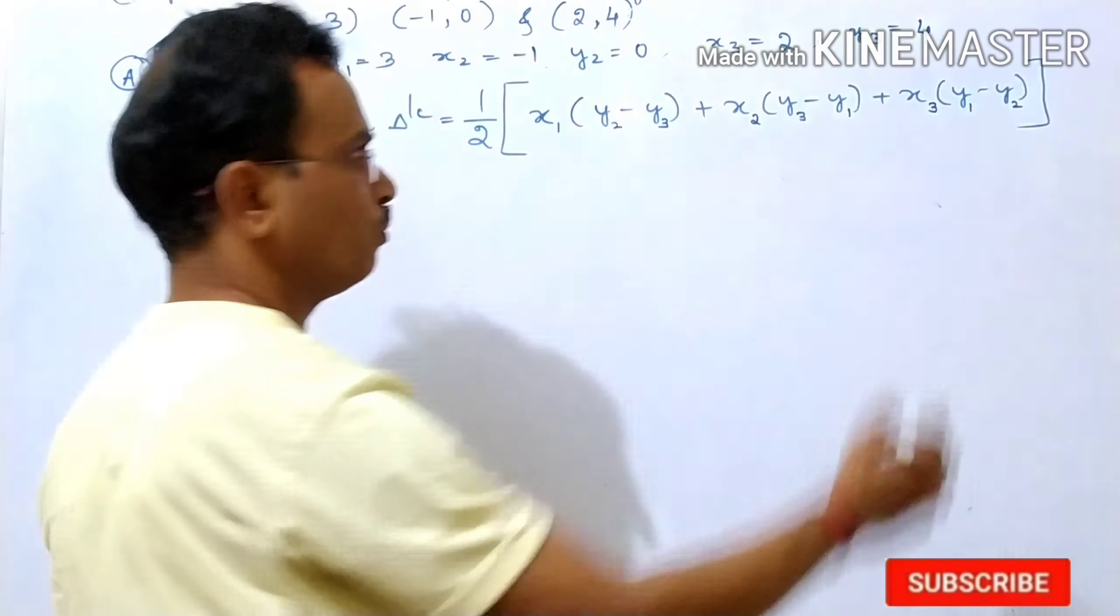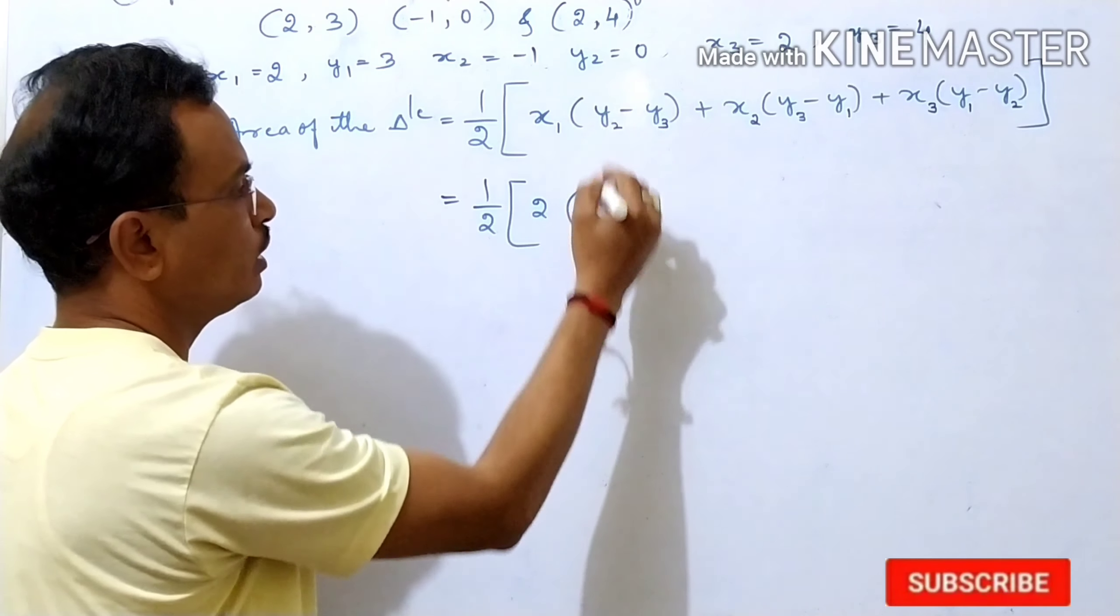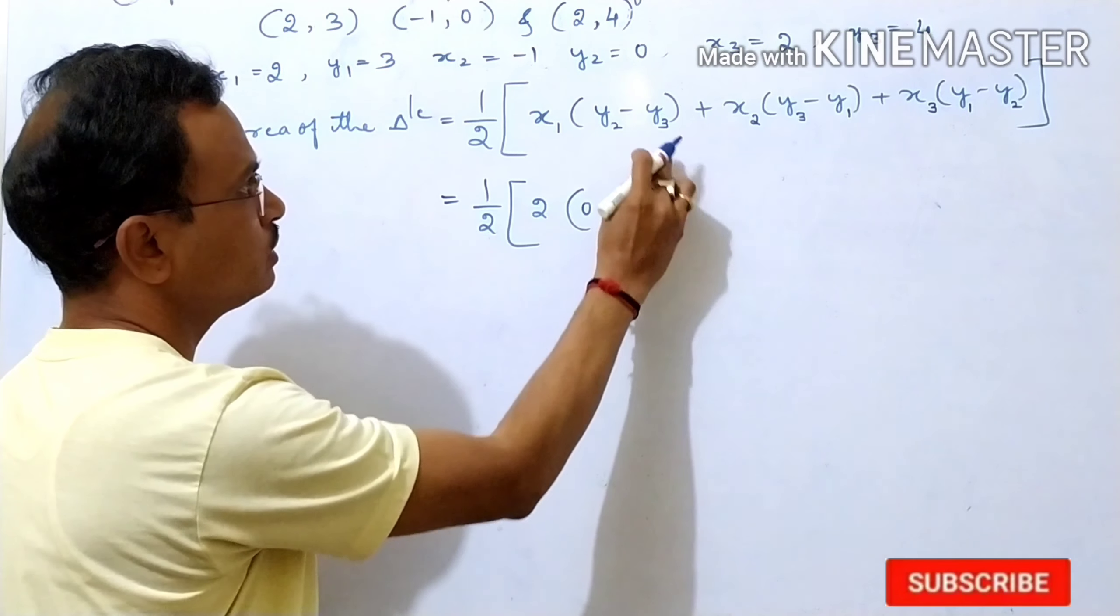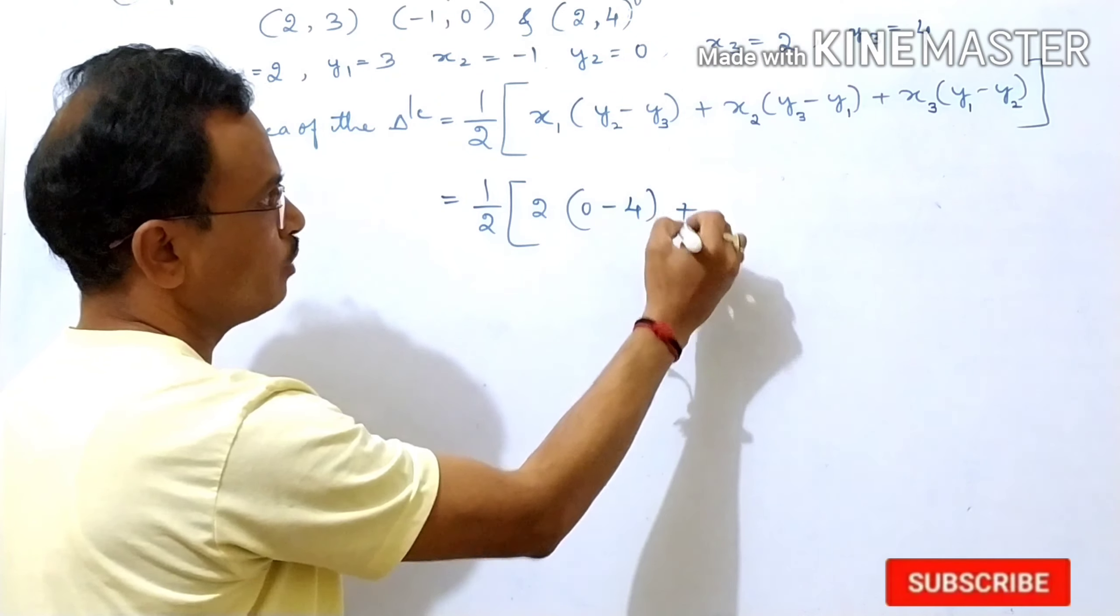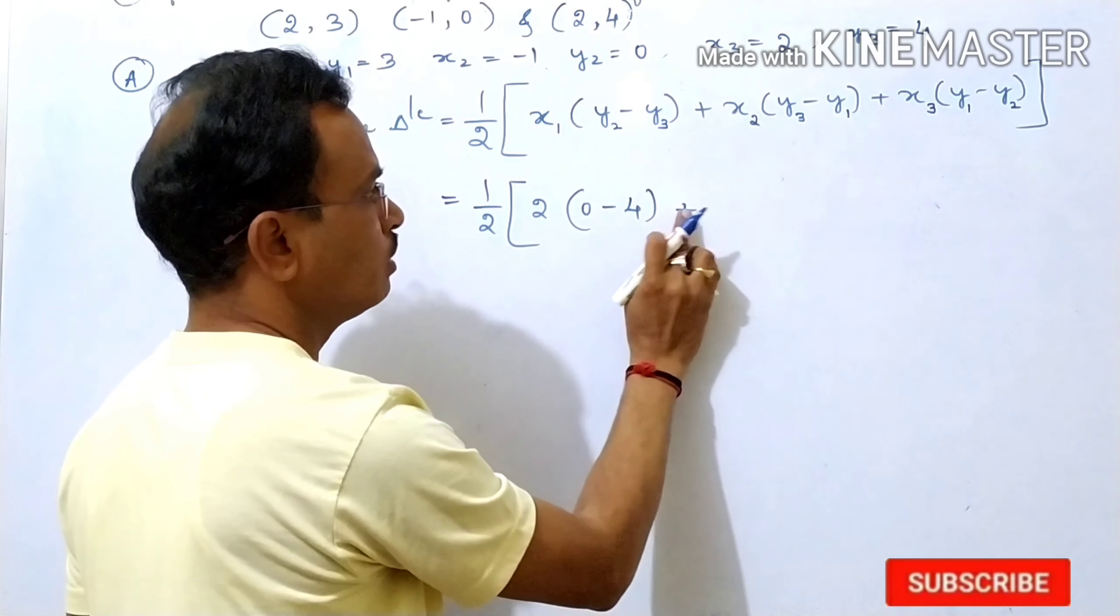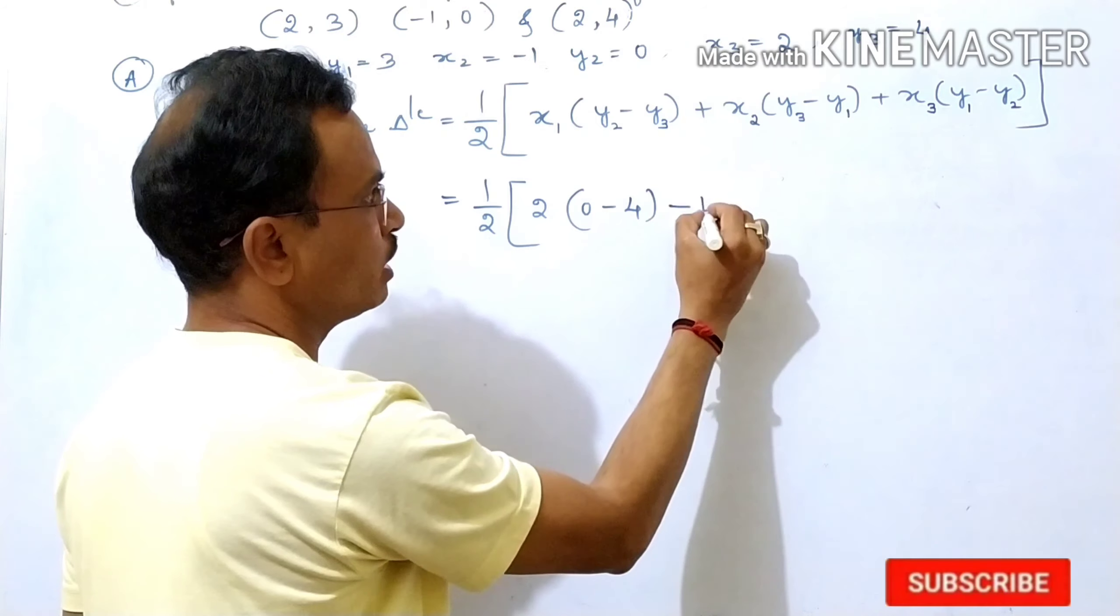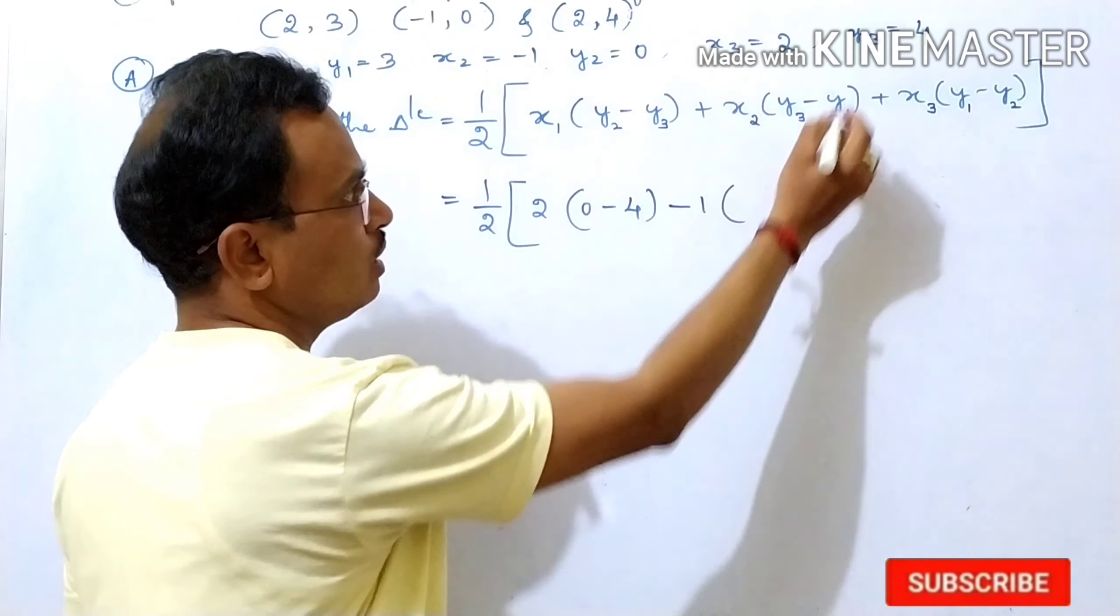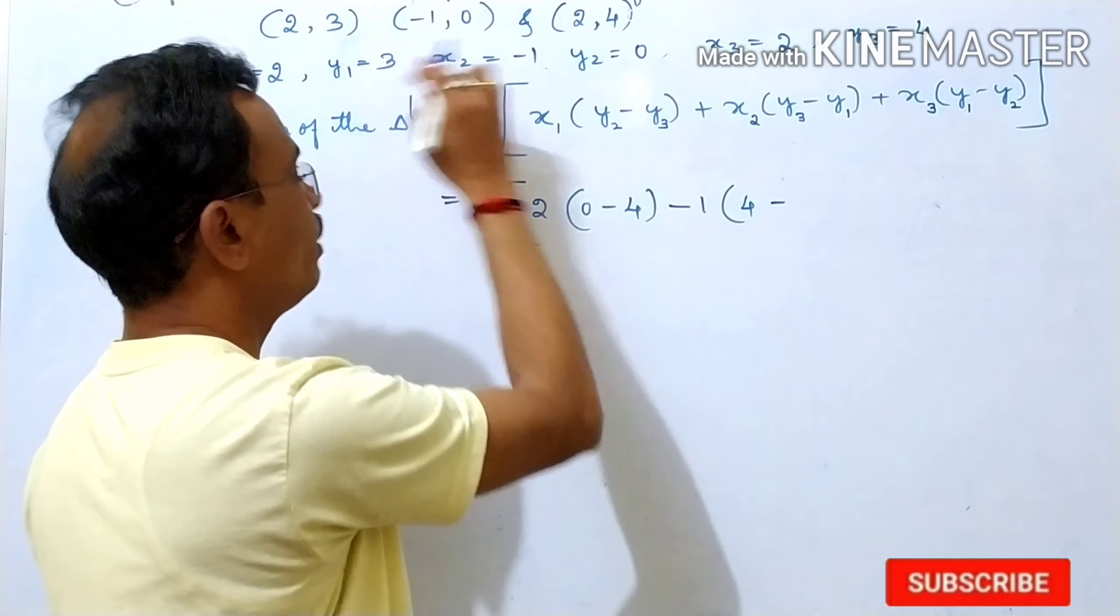Then formula, should write the formula. 1 by 2 as it is. x1, x1 here is 2, y2 that is 0, minus y3, y3 is 4. Then plus x2, x2 is minus 1. But here plus into minus, it become minus. So, minus 1. Then y3 is 4, minus y1, y1 is 3.